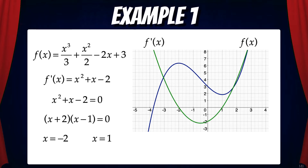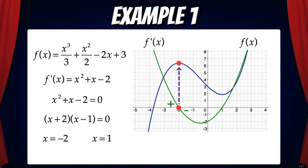In green, I've shown the graph of the first derivative, and we can see that the zeros are at x equals negative 2 and x equals 1. The zero at x equals negative 2 corresponds to a local maximum on the graph of f. Note that the slope of f changes from positive to negative at x equals negative 2, and this means the derivative changes from positive to negative there. The zero at x equals 1 corresponds to a local minimum on the graph of f, where the slope changes from negative to positive.